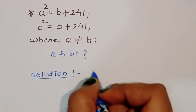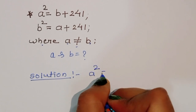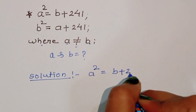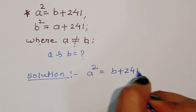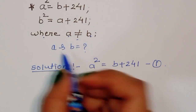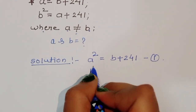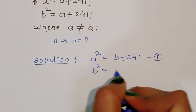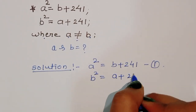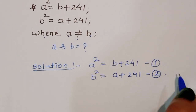Let's begin the solution. First, what is given: A squared equals B plus 241 — this is equation 1. Next, B squared equals A plus 241 — this is equation 2.